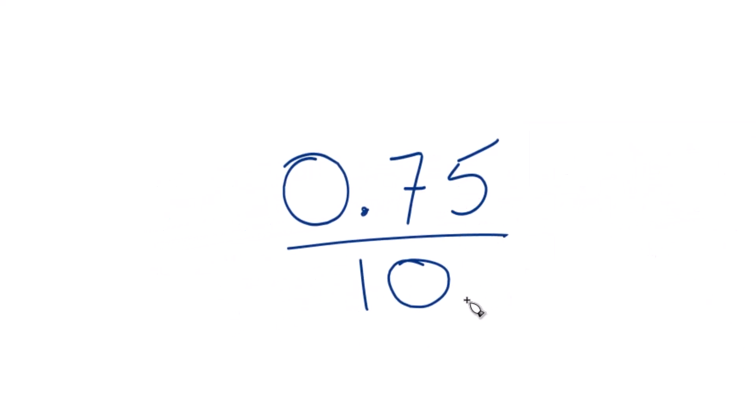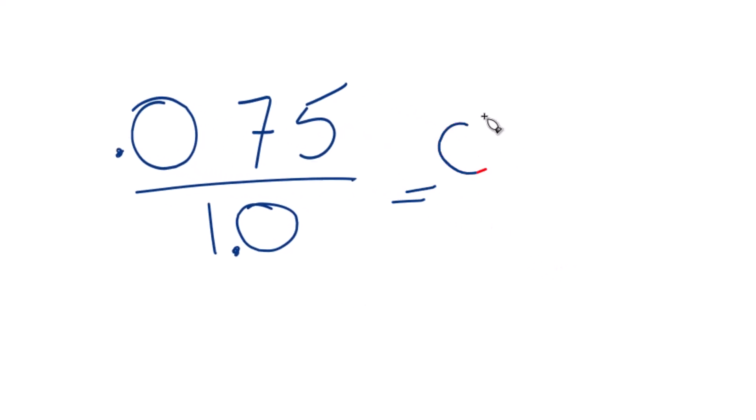So when we do that, you can imagine there's a decimal point here after the whole number. If we move this over 1 here to the left, we need to move this over 1 here to the left. And now you have 0.075 over 1, and that just equals 0.075.